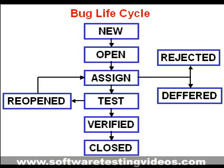The different states of a bug can be summarized as: new, open, assigned, test, verified, deferred, re-opened, rejected, and closed.